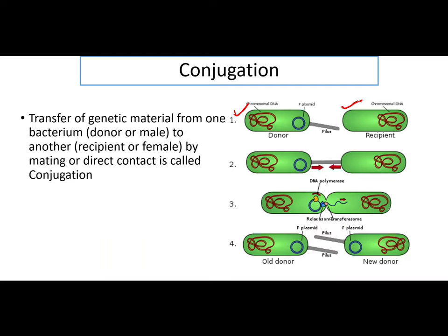The F plasmid is a conjugative plasmid which basically codes for sex pili. The sex pili — the donor bacteria will produce a pilus which will move from the donor bacteria to the recipient bacteria. The donor bacteria will produce the pilus and that pilus will form a bridge between your donor and recipient.